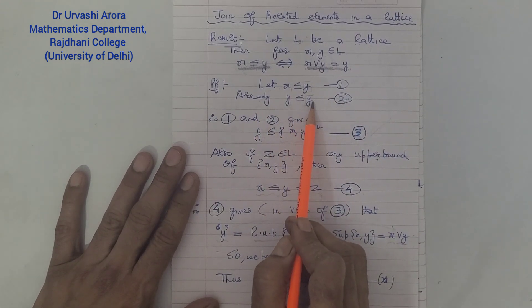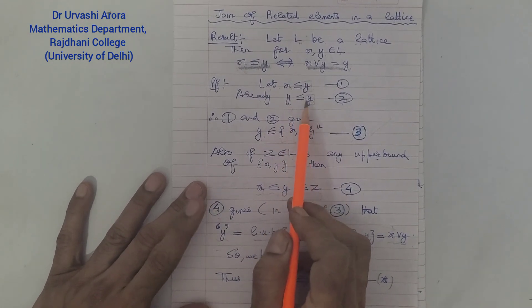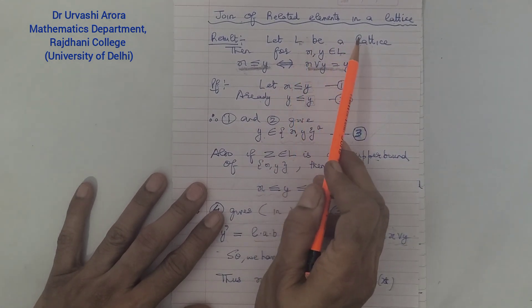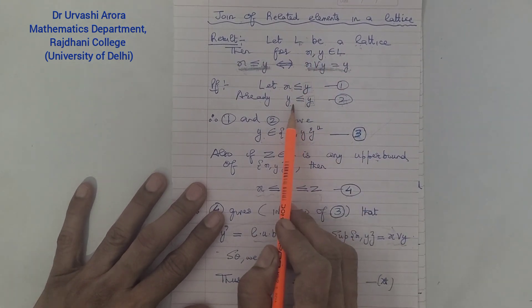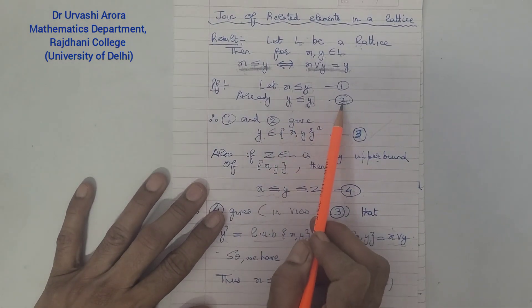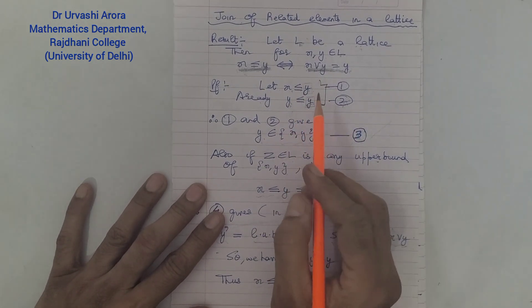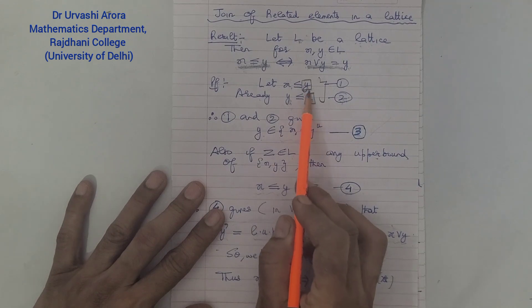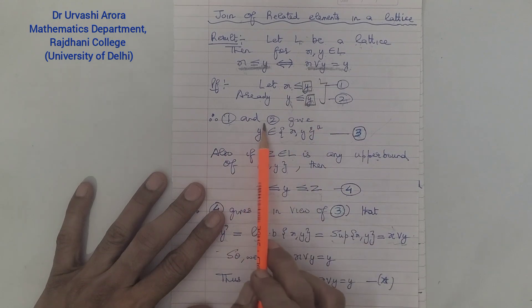We already know that y ≤ y. This is because L is a lattice, and a lattice is always a poset, and in a poset reflexivity holds — every element is related to itself. So in particular y is related to y, and we mark this as (2). From (1) and (2), y is greater than or equal to both x and y, so y is acting as an upper bound for both x and y.